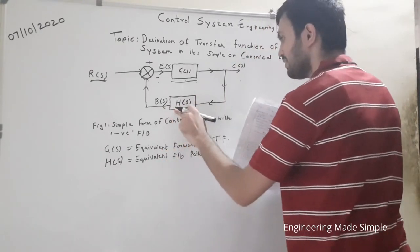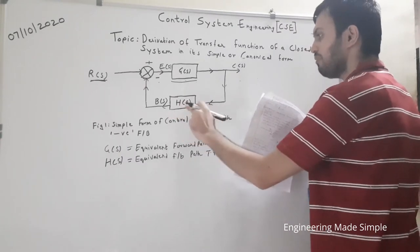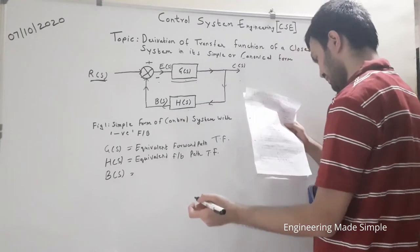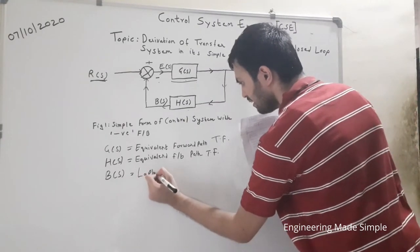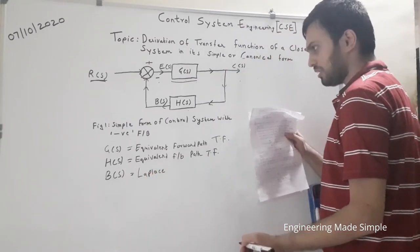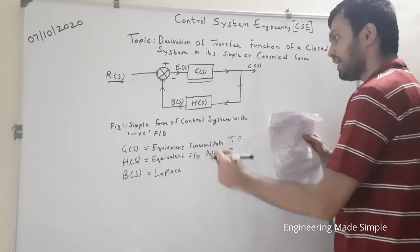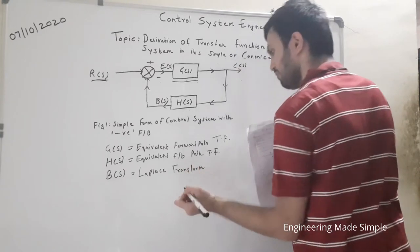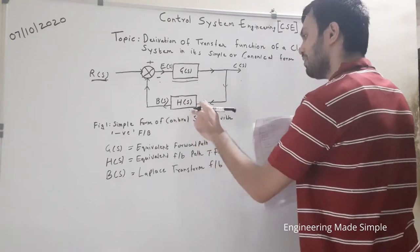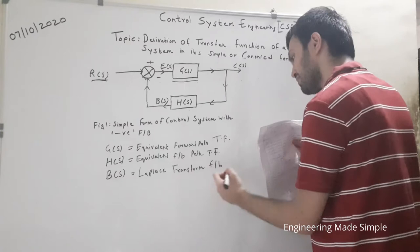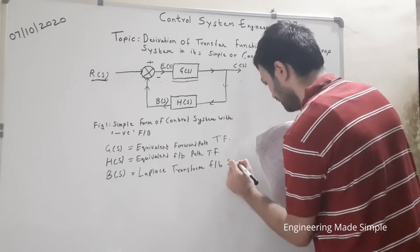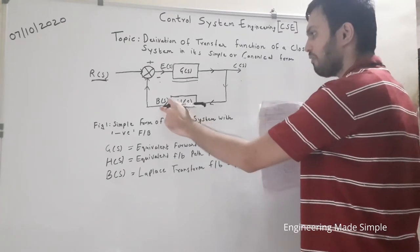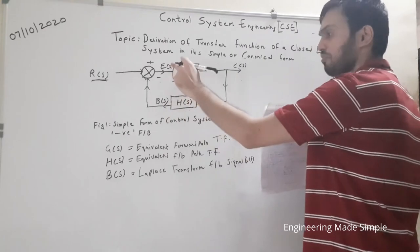H(s) is the equivalent feedback path transfer function. B(s) is the output obtained after the signal passes through the feedback element H(s), so it is known as the feedback signal — the Laplace transform of the feedback signal b(t). In any block diagram in control systems, if you see 's' in brackets, that means the signal is in the s-domain.